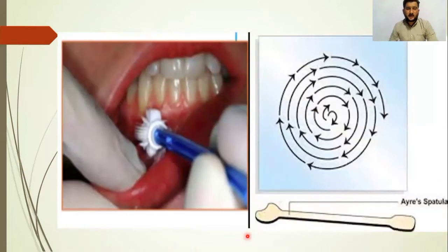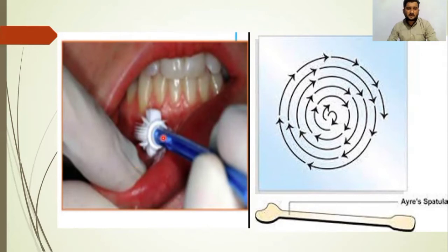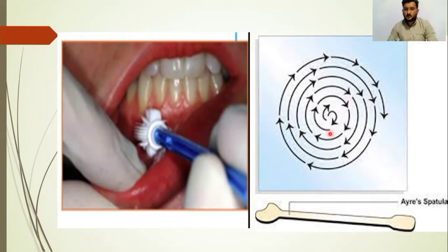In this diagram you can see that the brush technique is also used to get the sample in abrasive cytology. On the right side of the diagram you can see a spatula, which is also used to collect the sample in abrasive cytology. In abrasive cytology, we move away from the region of the target site.